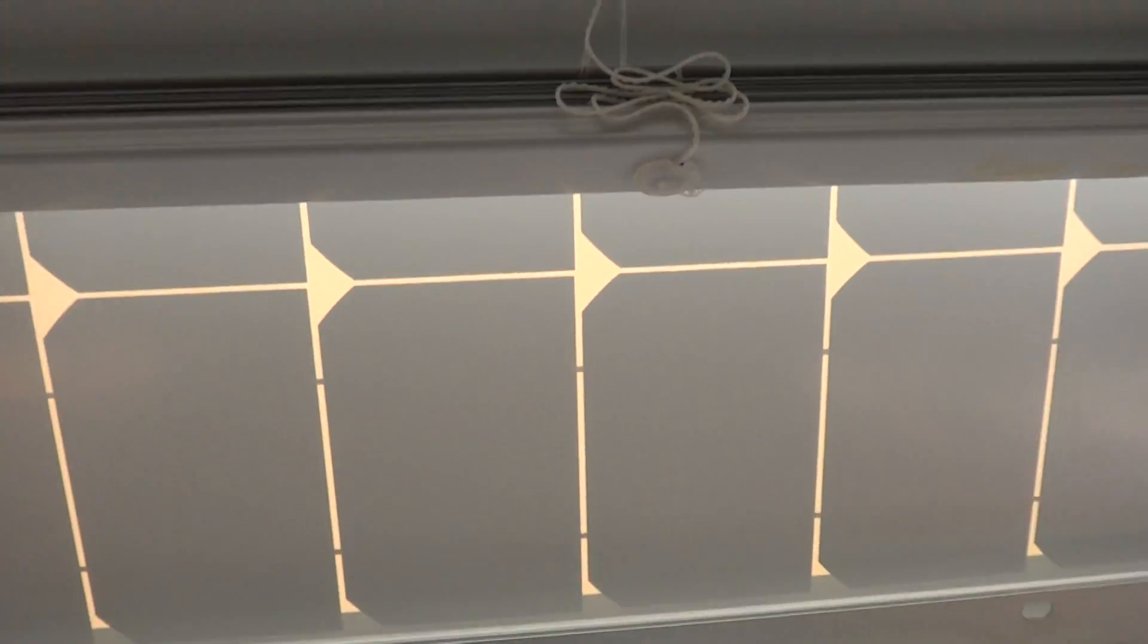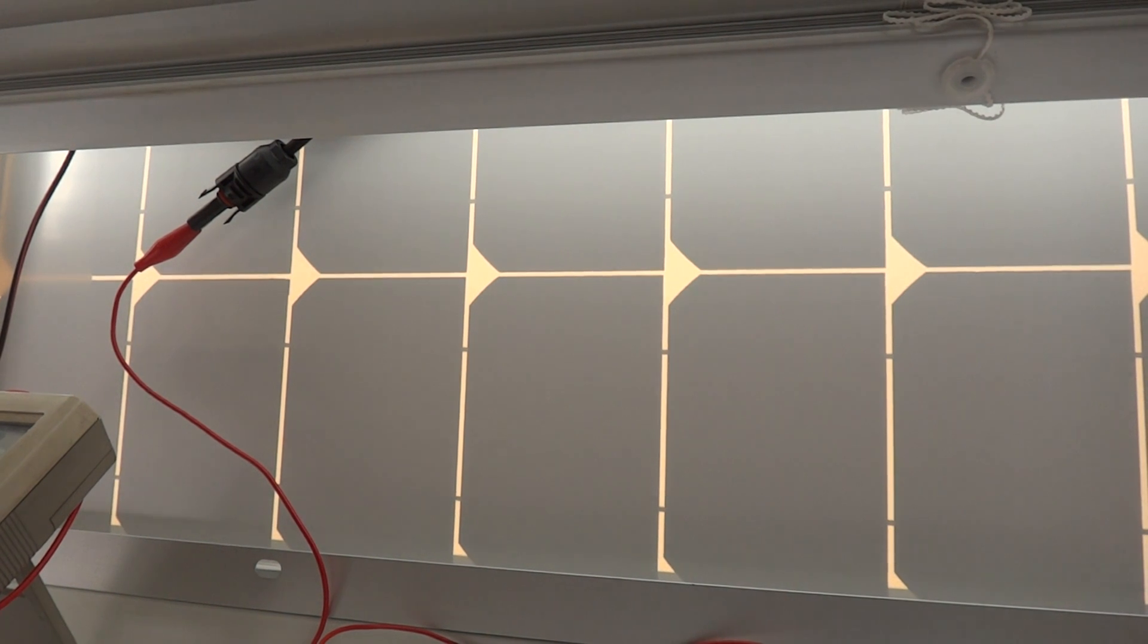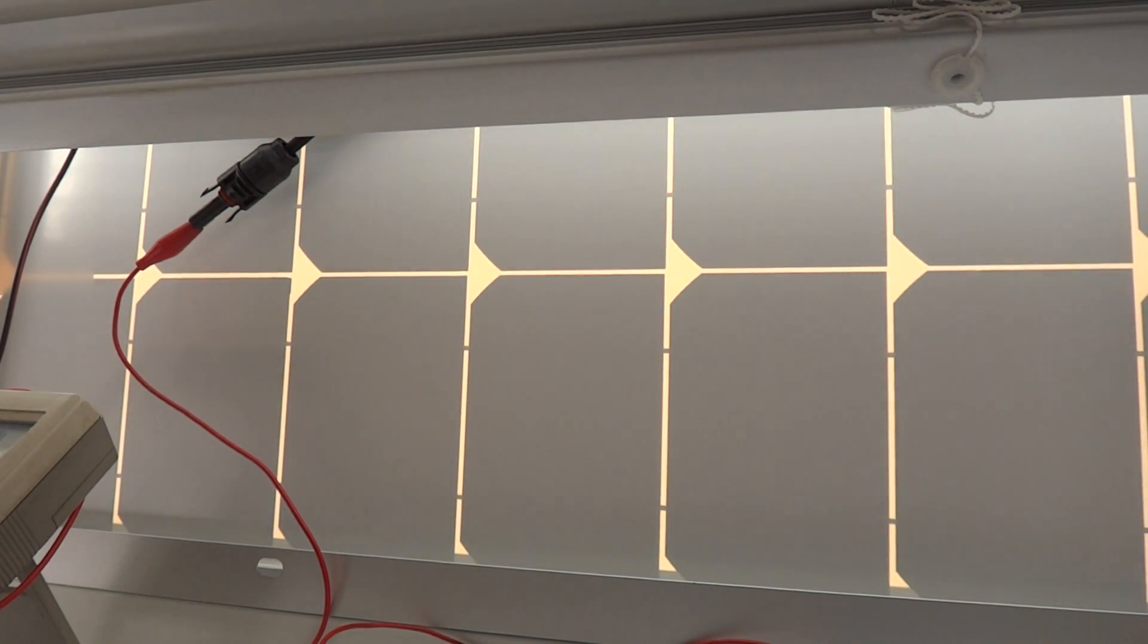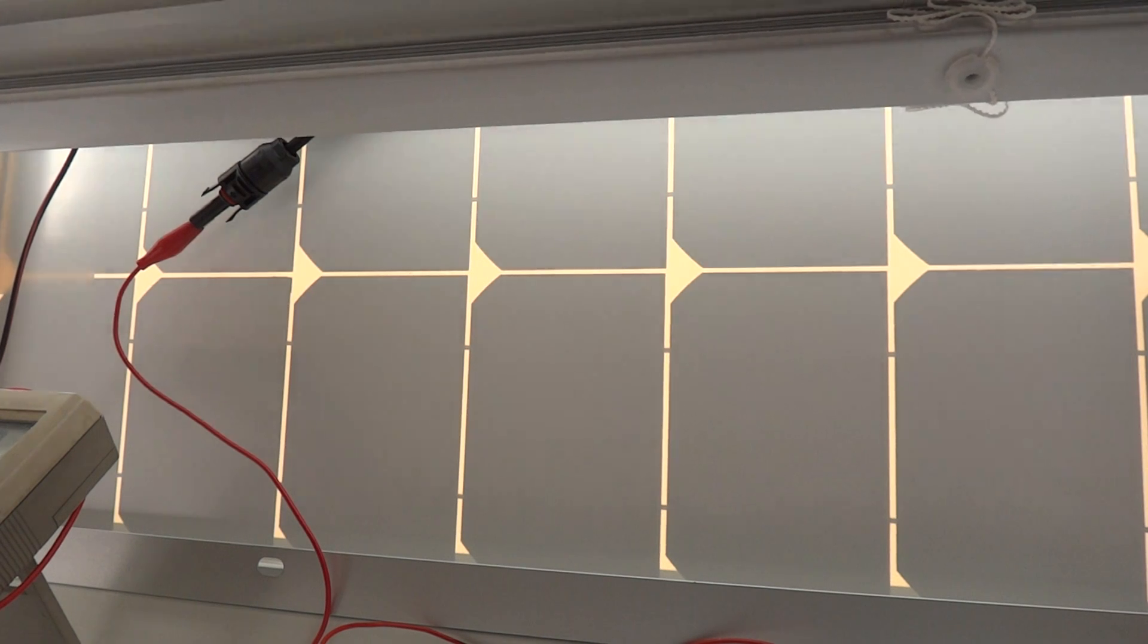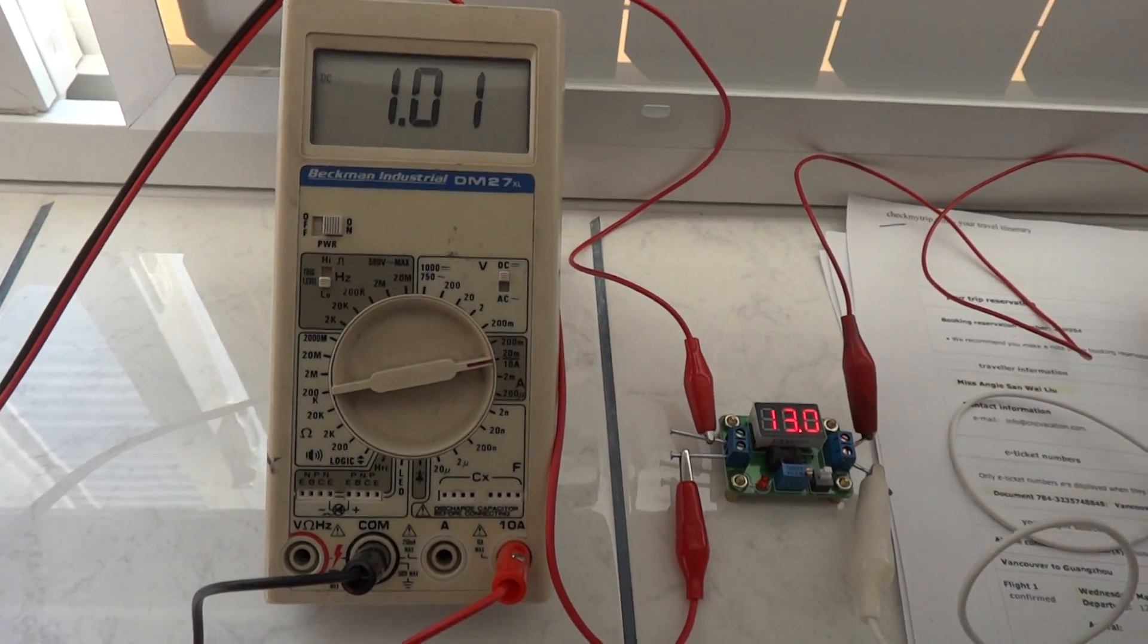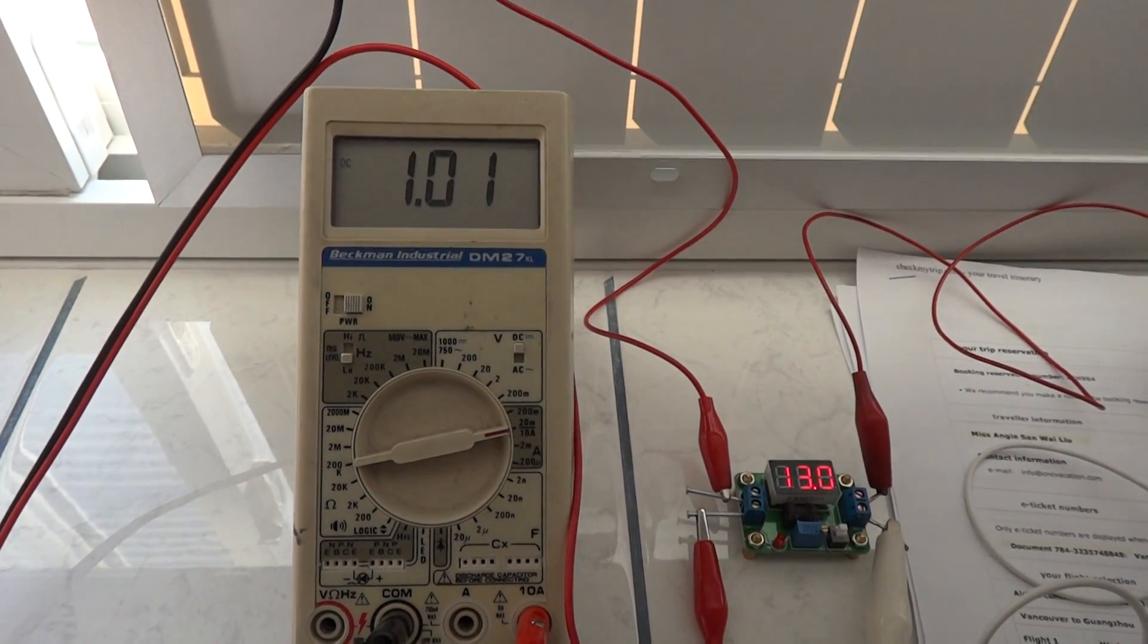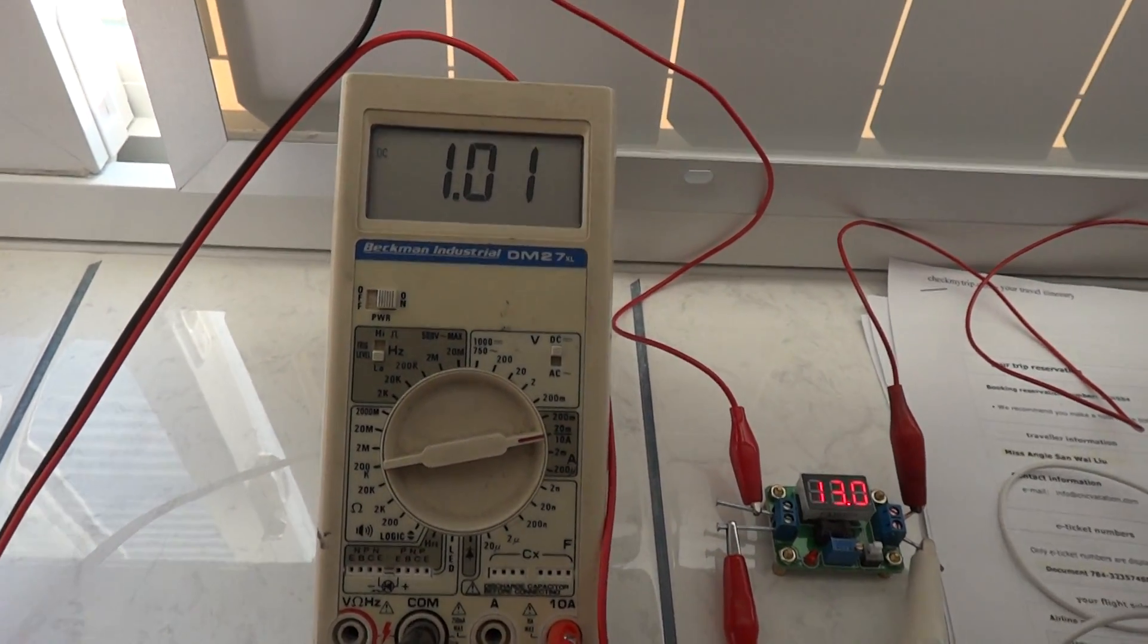Open voltage is 21 volts. And the open, or I should say, the short circuit current it could produce is 3.22 amps. I'm drawing right now 1 amp. As I'm recording this on video, it's drawing 1 amp right now on high power. It can produce 3 amps.